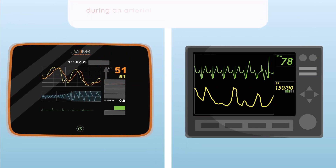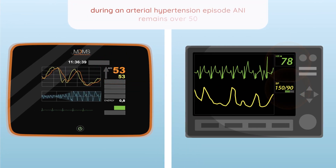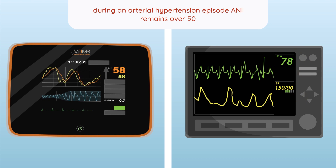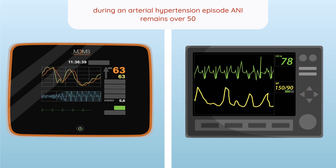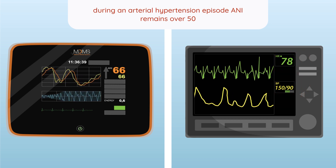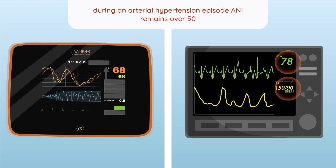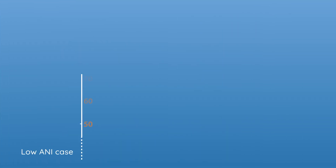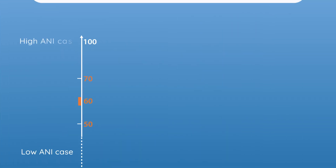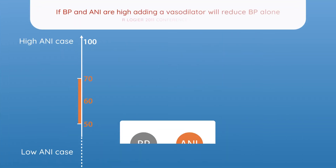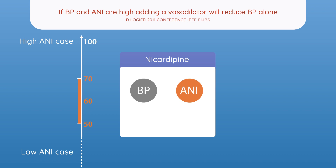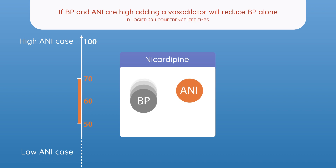If heart rate and blood pressure increase and ANI stays over 50%, then nociception is not the cause of a hemodynamic increase. In this situation, a vasodilator can be administered, avoiding an extra dose of fentanyl and the risk of overdosing.